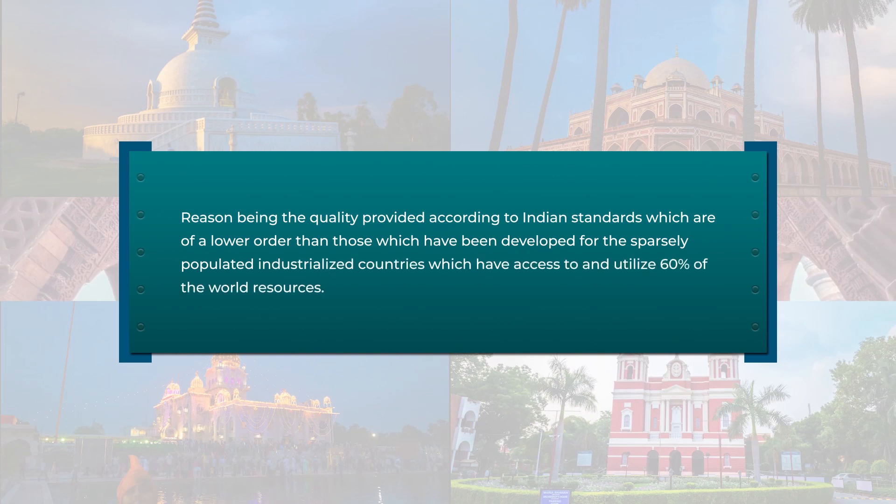Tourists demand services that they are accustomed to at home. Thus, the Western-style hotel has replaced traditional accommodation and air transport has replaced rail and road transportation. This is because the quality of the latter conforms to Indian standards, which are of a lower order than those developed for the industrialized countries that have access to 60% of the world's resources. However, our standards are becoming international level.